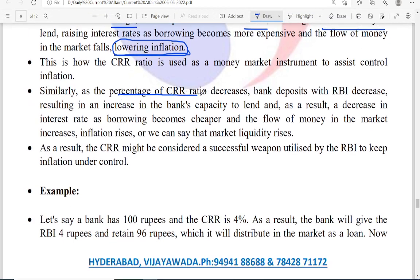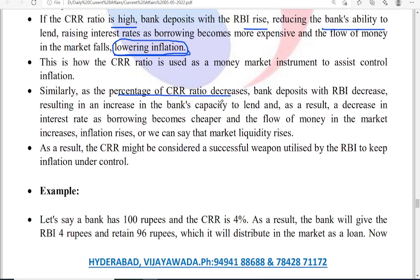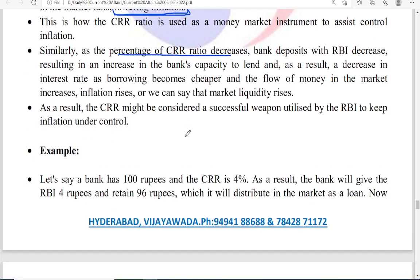Similarly, if the CRR ratio decreases, then bank deposits at RBI also decrease, so the amount available for loans increases. Borrowing becomes cheaper and flow of money increases — more liquidity will be present in the market. However, the side effect is that inflation also rises. CRR is therefore considered a very successful weapon by RBI to keep inflation under control.